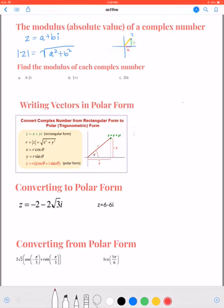There are two forms in this unit that we're going to talk about writing our vectors. One you know is the rectangular form. That's in this form where we have our real part plus our imaginary part where a and b are integers.